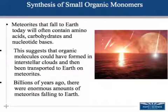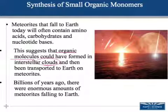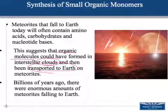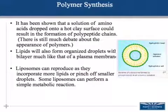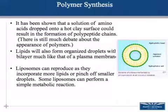There is also evidence that organic molecules could have formed in interstellar clouds and been transported to Earth on meteorites. Meteorites that hit the Earth today often contain amino acids, carbohydrates, and nucleotide bases, lending support to this idea. The formation of polymers is still debated, but experiments have shown they could form by taking a solution that contains amino acids.